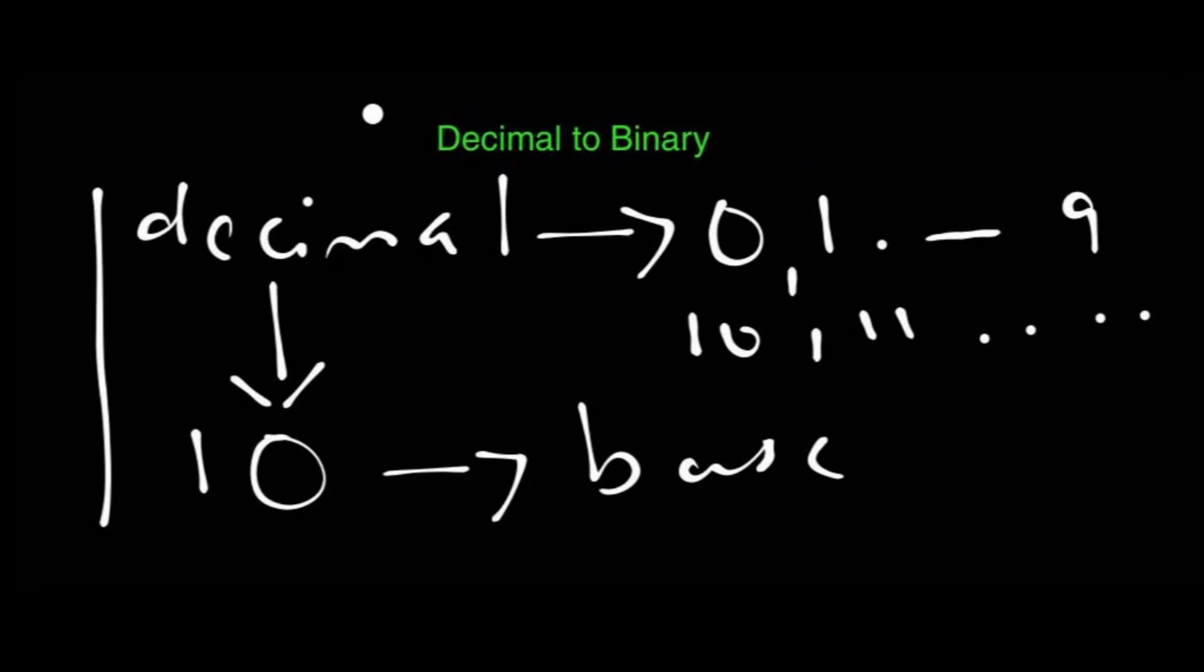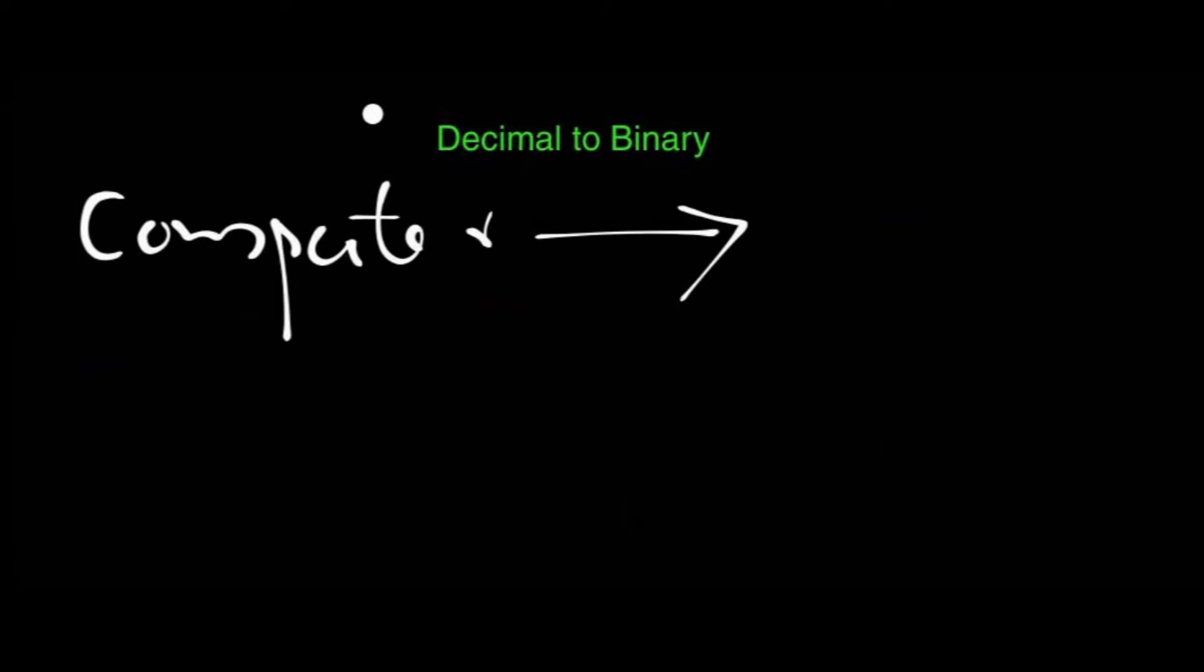Now we can talk about binary number system. When computers evolved, there came a need for new number systems for better functionality. Number systems like binary, octal, and hexadecimal evolved. In this video, I am only discussing the binary number system.